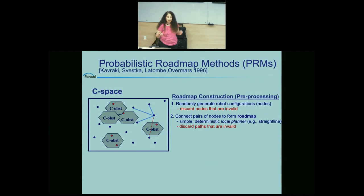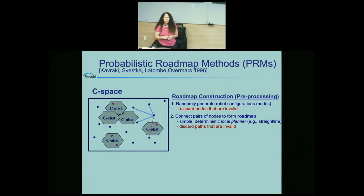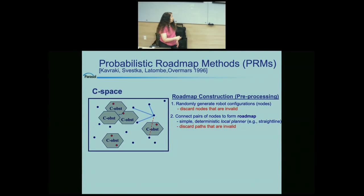After sampling, for each retained configuration, they pick a small fixed number — usually 5 to 25 — of nearby configurations and try to connect them using a simple deterministic method. They check validity along the straight line between two points: if all intermediate points are valid, they keep the edge; if any one is invalid, they discard it. Note that it is possible to connect some point pairs, but this simple method may not discover that — so they won't appear in the roadmap.